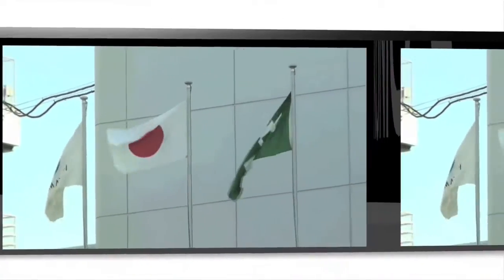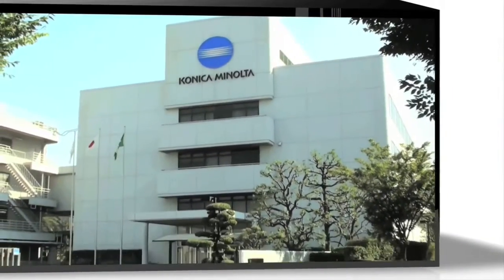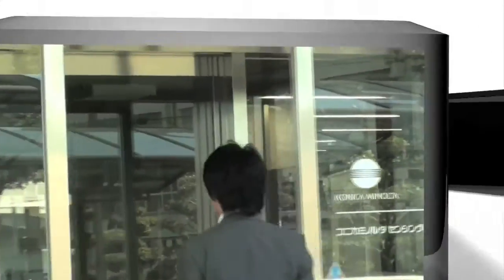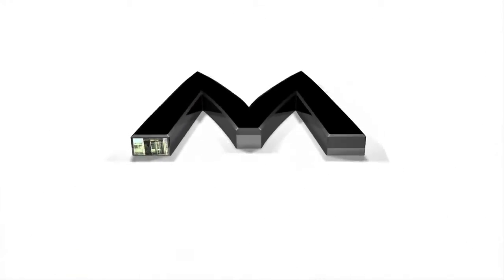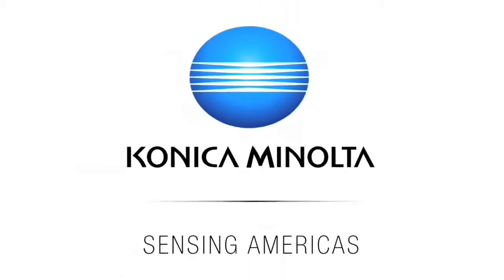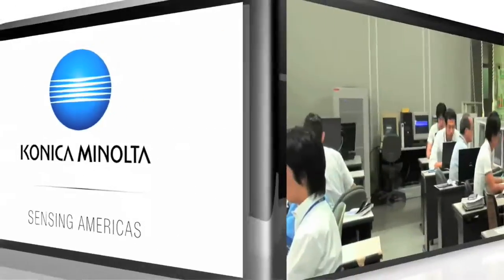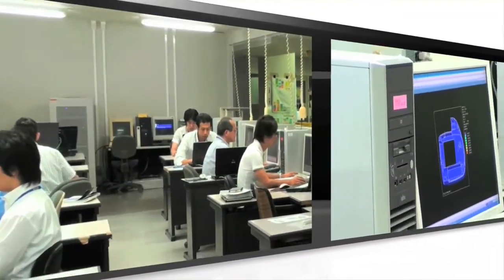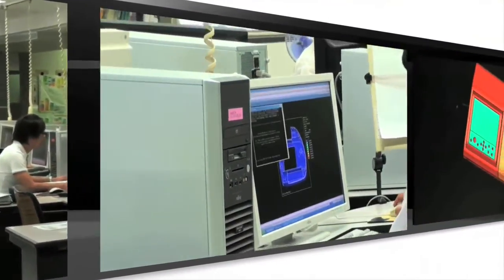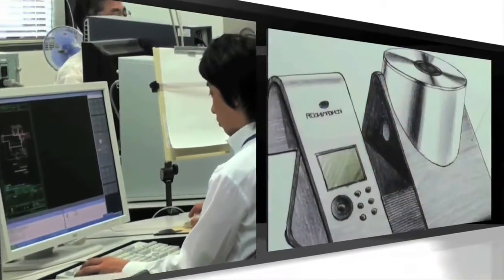When it comes to color, light, and 3D shape measurement, the world comes here, to the Konica Minolta Sensing Global Headquarters in Osaka, Japan, where tomorrow's solutions are concepted, researched, and developed each and every day.